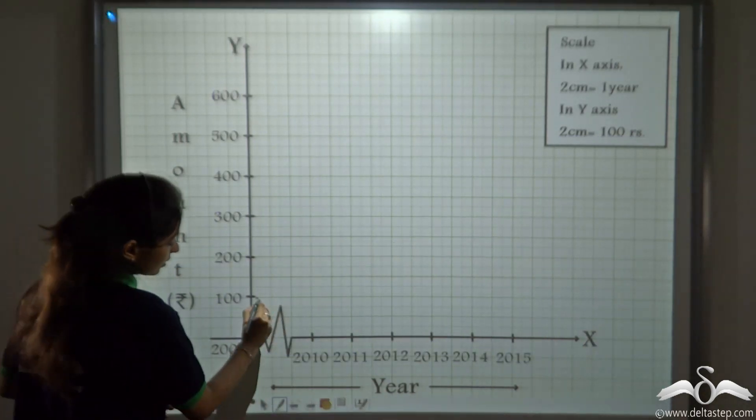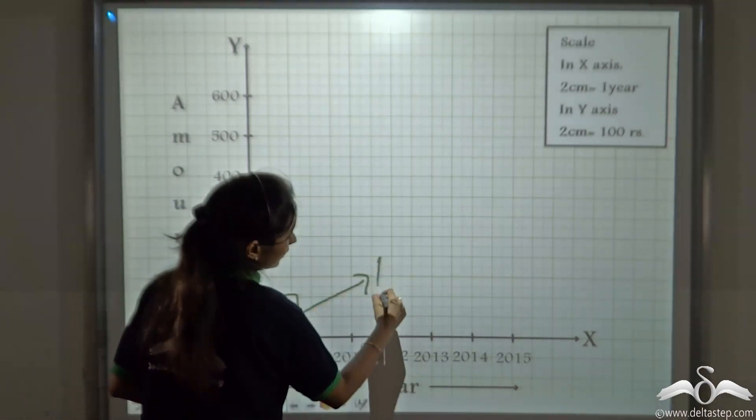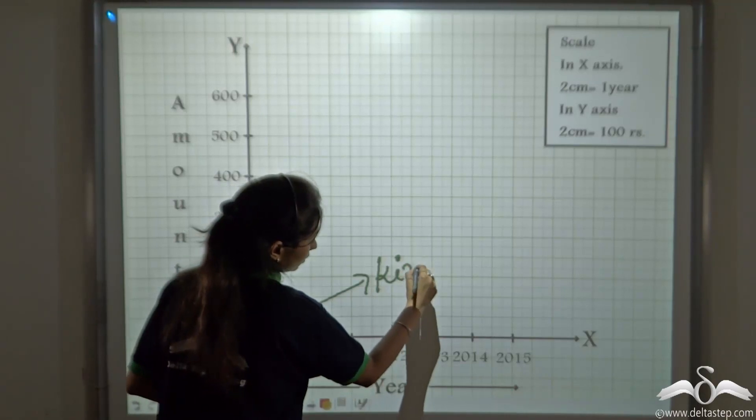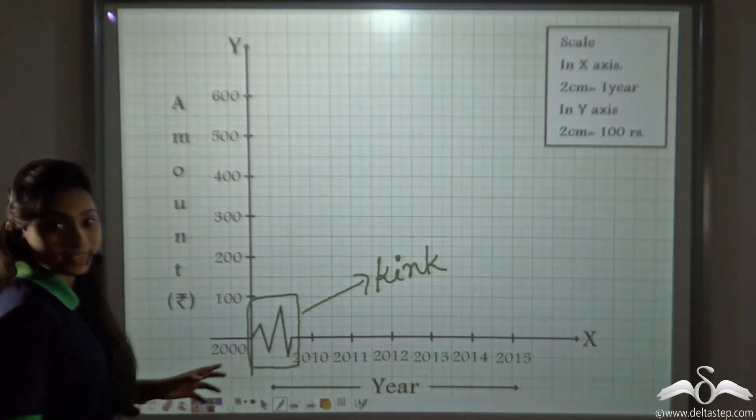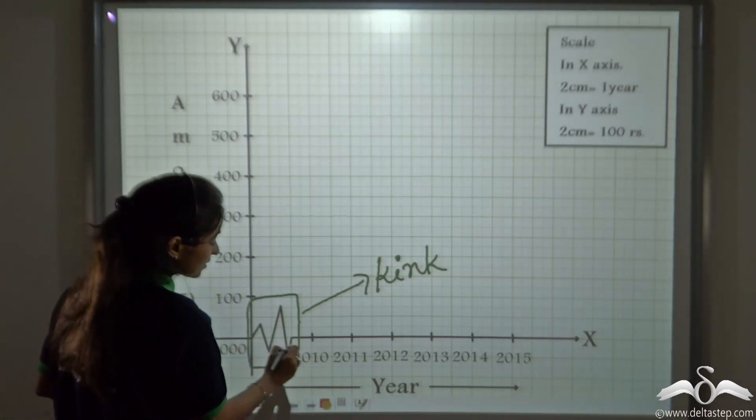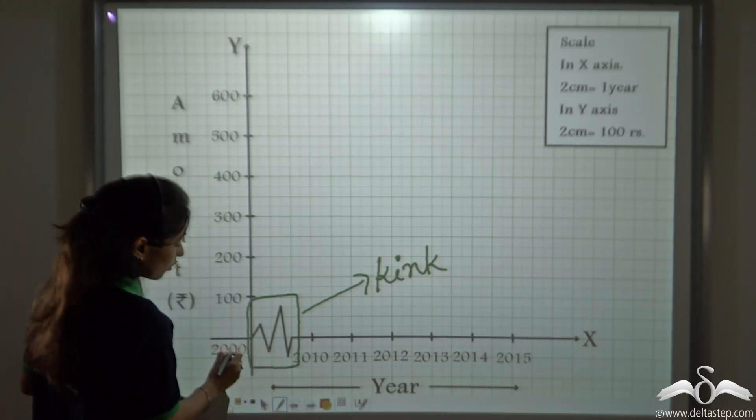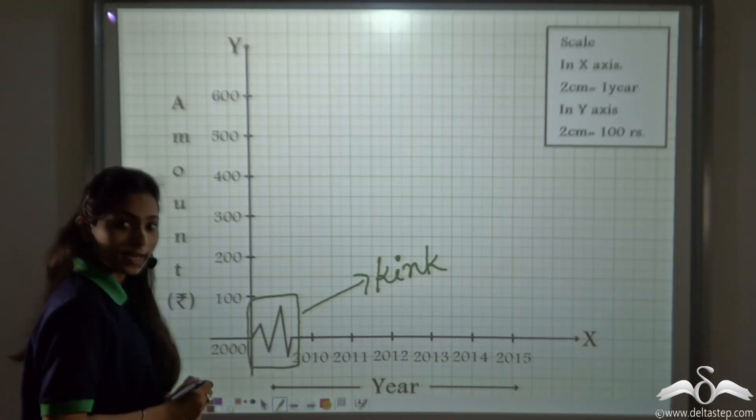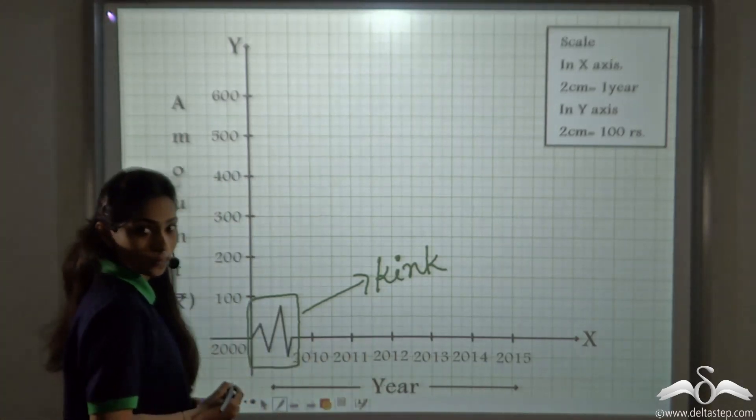Do you notice this here? Well, this is known as the kink. Now what is this kink? Well, this symbol is used so that you can show that there is some data here which is missing. So we are not plotting the years from 2000 to 2009. After which we are showing 2010, 2011 and so on.